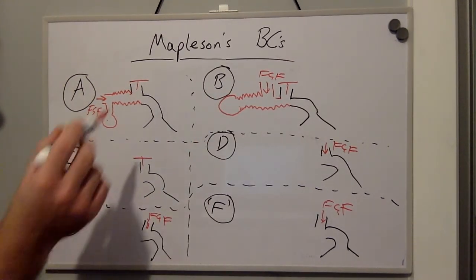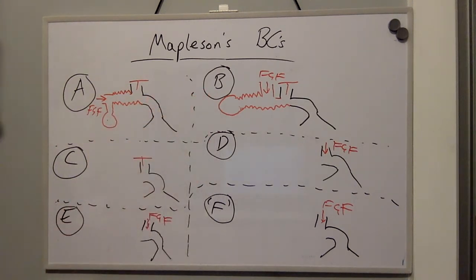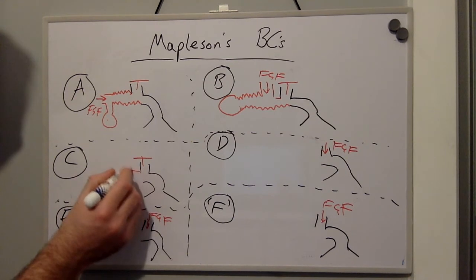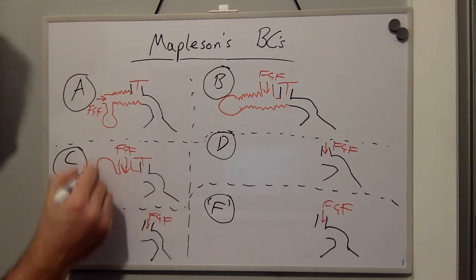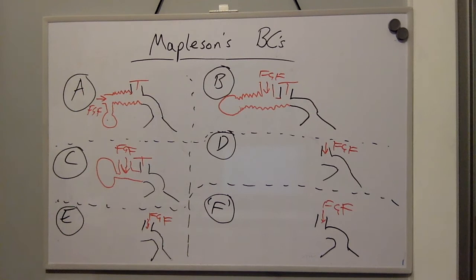Mapleson C is similar to Mapleson B but the tubing is much shorter. So you have the fresh gas flow coming in here and the bag exists right next to the fresh gas flow without any long tubing.